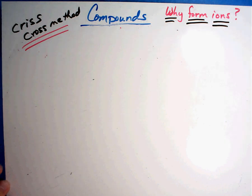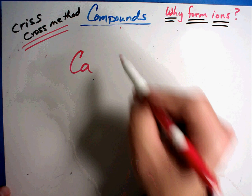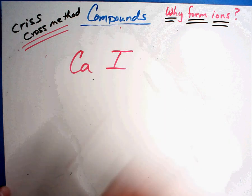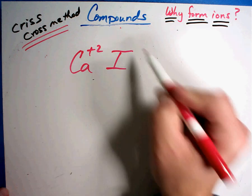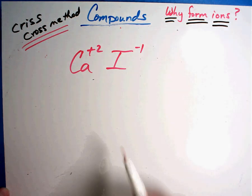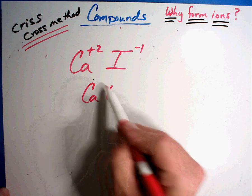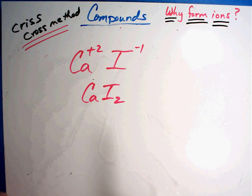A couple more. Let's say we have Ca and I. Ca is plus two, I negative one. They don't equal. Switch them. CaI₂. The two moved outside, called calcium iodide. It's really pretty simple.